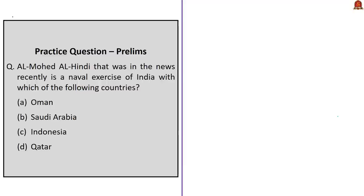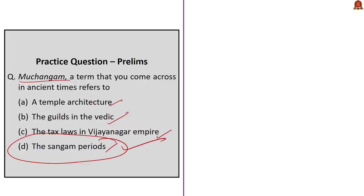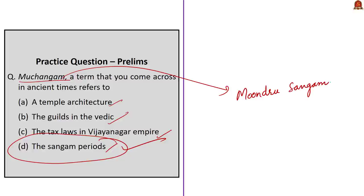The next question asks: Al-Mohed Al-Hindi, which was in the news recently, is a naval exercise of India with which country — Oman, Saudi Arabia, Indonesia, or Qatar? Based on our discussion, this is a naval exercise between India and Saudi Arabia, and it is the maiden naval exercise between both countries. The correct answer is option B, Saudi Arabia. The following question asks about Muchangam — a term from ancient times. Based on our discussion, the correct answer is option D, the Sangam periods. Muchangam is short for Munru Sangam, meaning three Sangams — the first at Madurai, second at Kapadapuram, third again at Madurai.